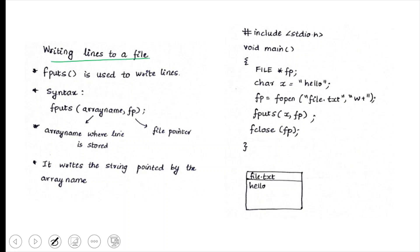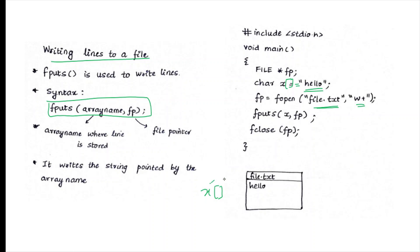fputs writes a line to a file. The syntax is: fputs(array_name, fp);. For example, to write "hello" stored in array x to file.txt: open file.txt in write mode, then use fputs(x, fp) to write the contents of x to the file. Close the file with fclose(fp) when finished.